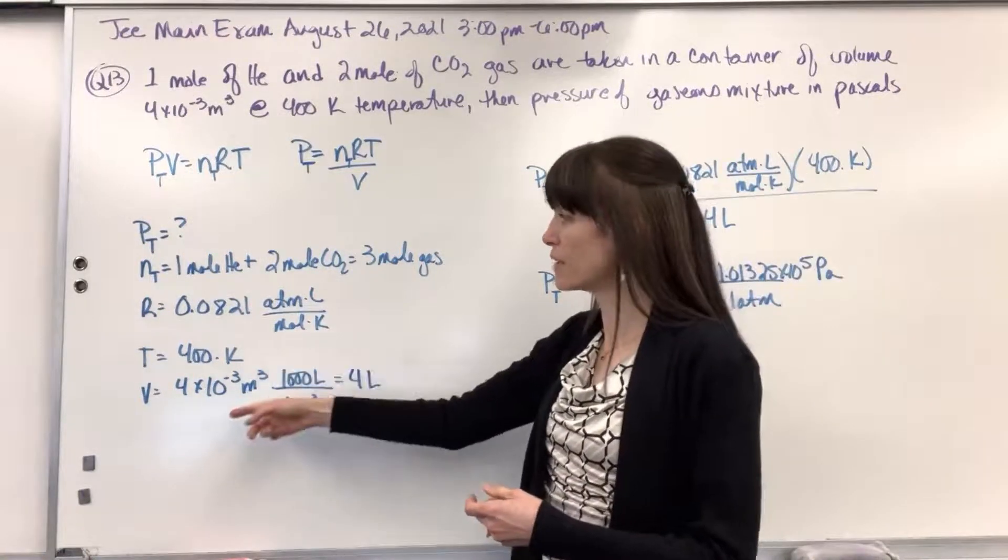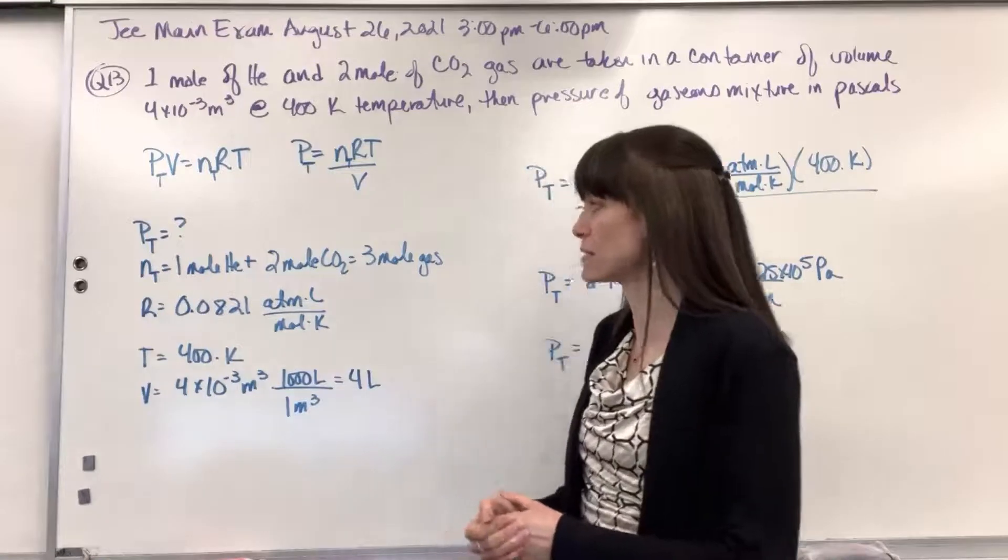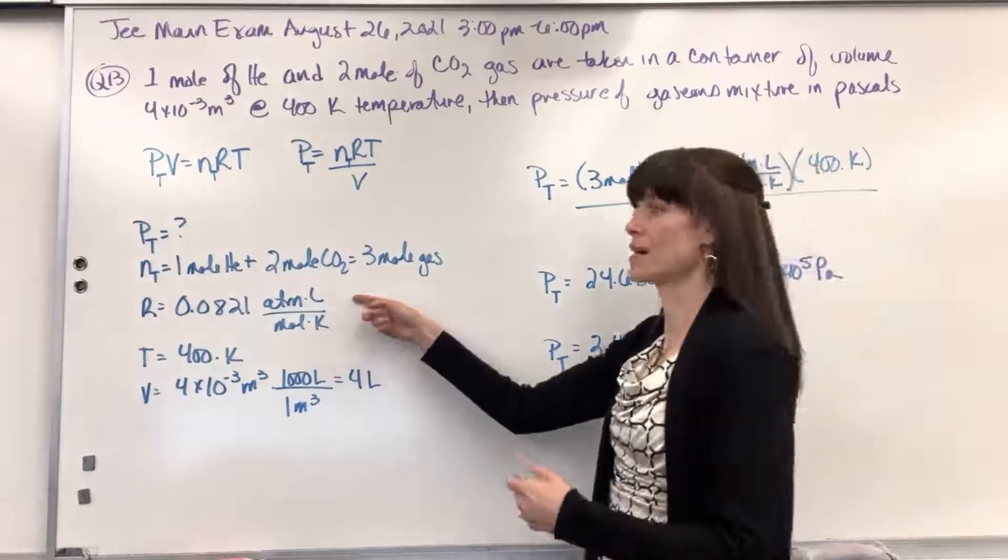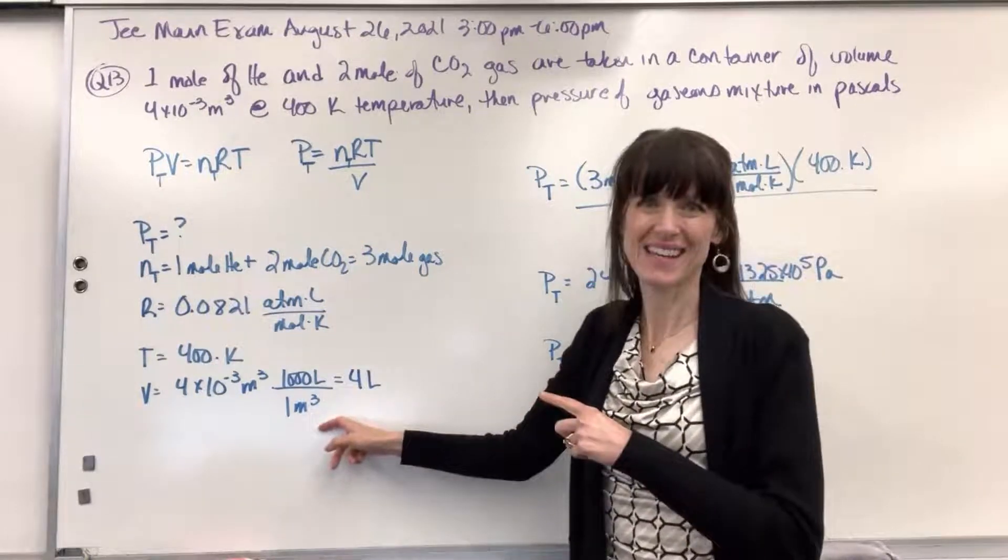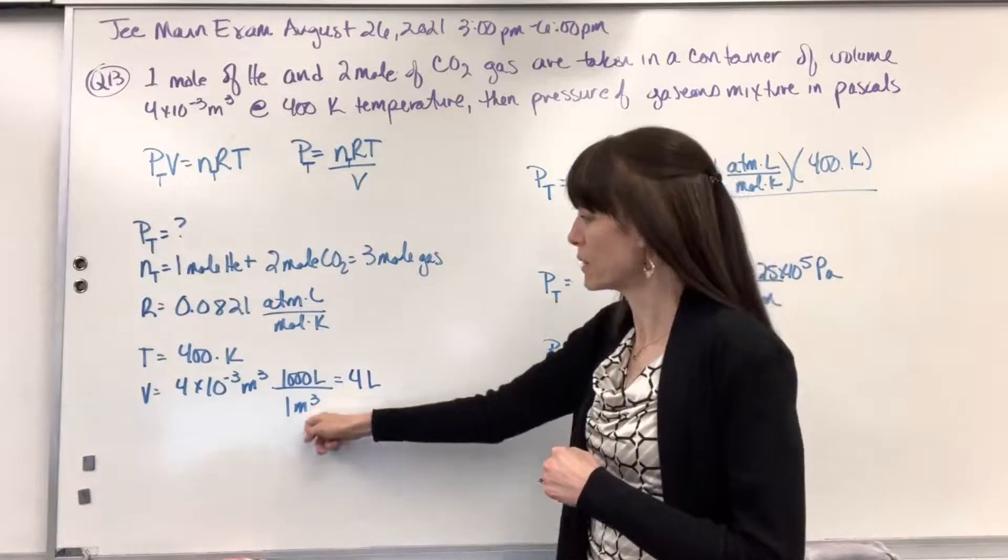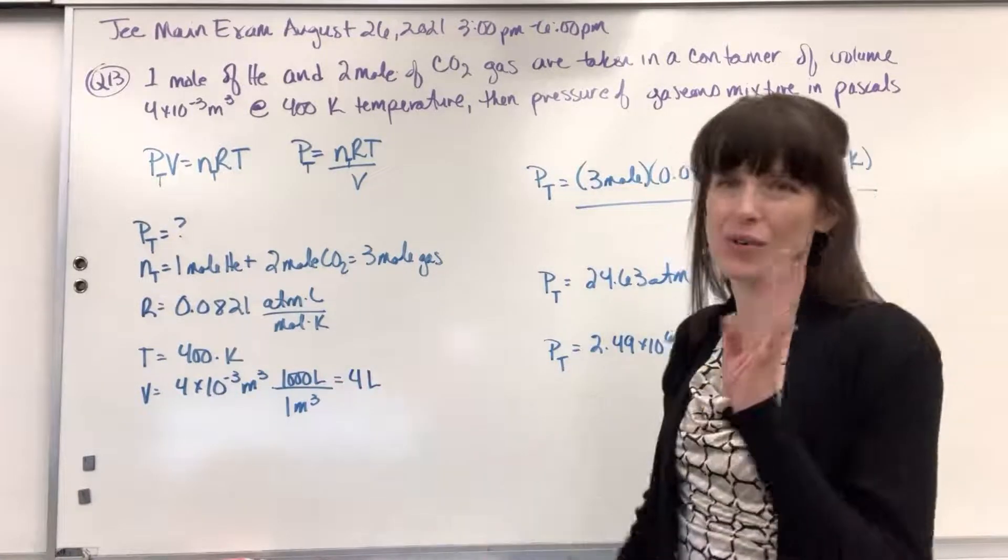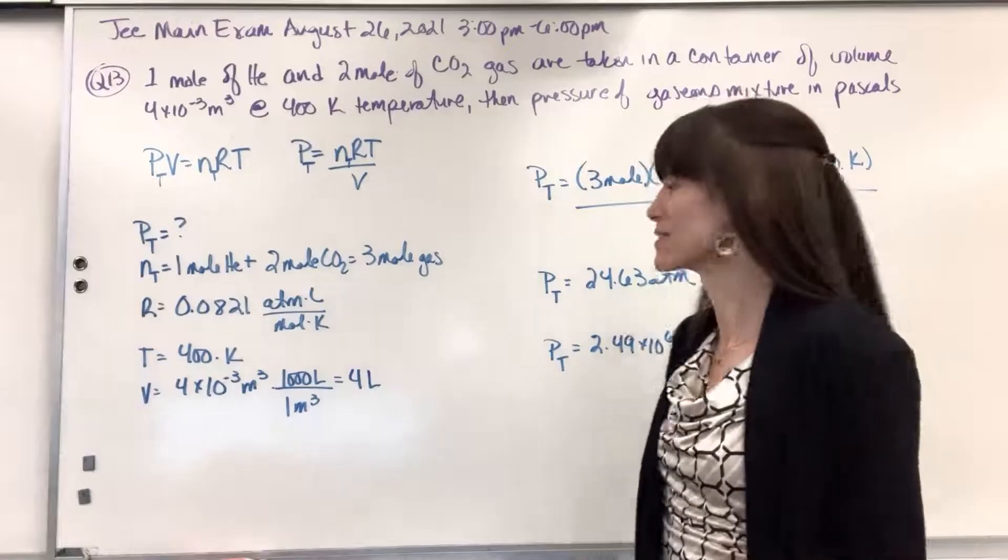...and then on my volume, 4 times 10 to the minus 3 cubic meters, well, my unit here for R is in liters, so we have to convert. I converted from my meters cubed to the liters. One meter cubed is a thousand liters, so that gives us four liters. The container is four liters large.